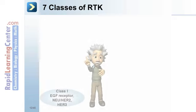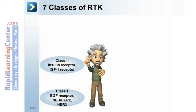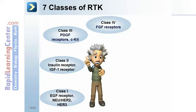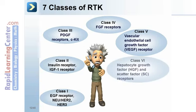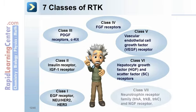There are seven classes of RTK. Class 1: EGF receptor, HER2, and HER3. Class 2: insulin receptor and IGF receptor. Class 3: PDGF receptors and C-kit. Class 4: FGF receptors. Class 5: vascular endothelial cell growth factor receptor. Class 6: hepatocyte growth factor and scatter factor receptors. Class 7: neurotrophin receptor families TRK-A, B, C, and NGF receptor.